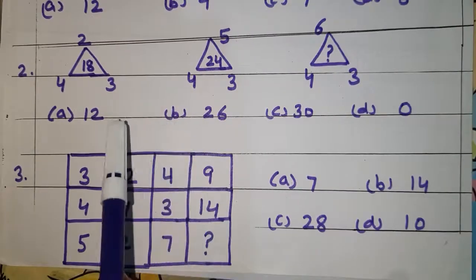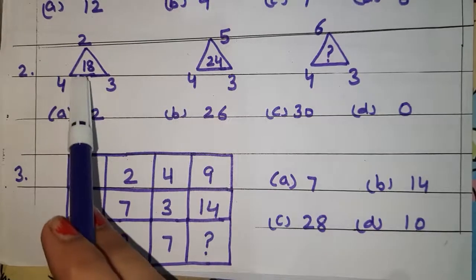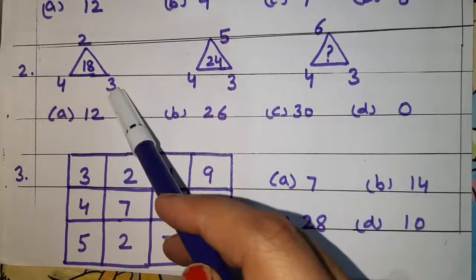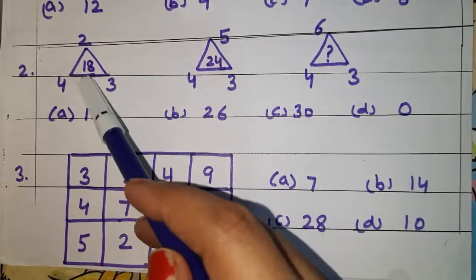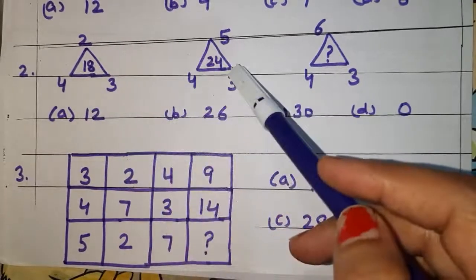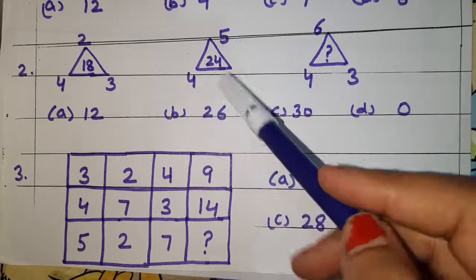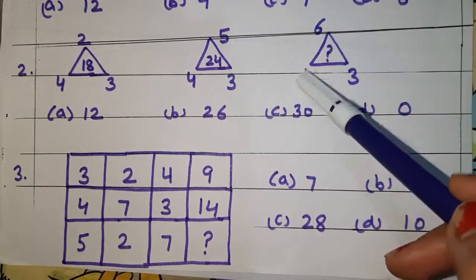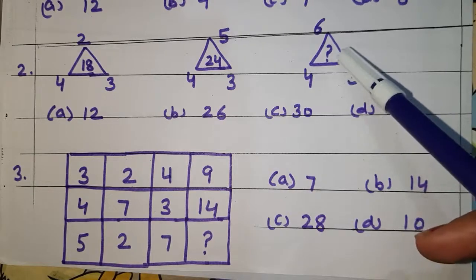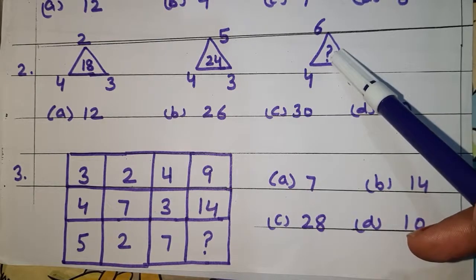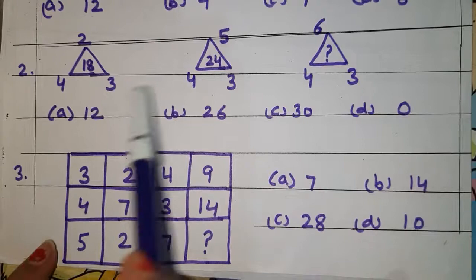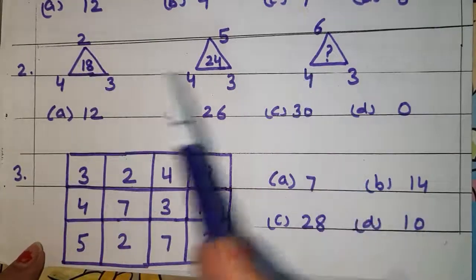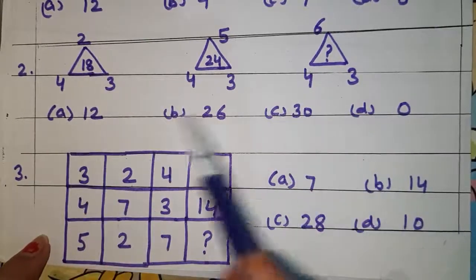Now question number 2. Again a triangle is given with 3 vertices: 2, 4, 3, and the center is 18. One more triangle: 5, 4, 3, and the center is 24. In the next triangle: 6, 4, 3 — and you have to find out the number at the center. Find the rule which is to be followed, and then find the correct answer.